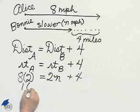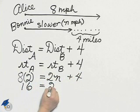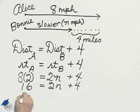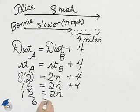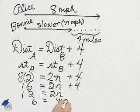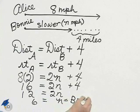16 equals 2N plus 4. 12 equals 2N. 6 equals N, which is Bonnie's speed in miles per hour.